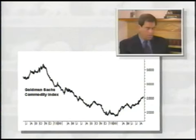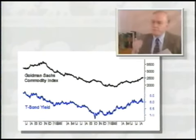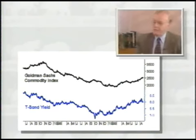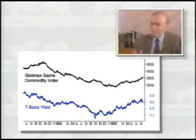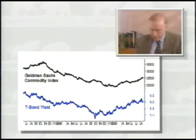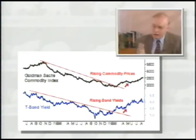Looking at a chart comparing the Goldman Sachs Commodity Index and US Treasury bond yields, they move in tandem — commodities and bond prices move in opposite directions, but commodities and interest rates move in the same direction. The chart along the top is the Goldman Sachs index; the chart along the bottom is Treasury bond yields. You can hardly tell the two apart. Into the beginning of 1999, commodity prices were in a downtrend and bond yields were in a downtrend. However, both broke their downtrend lines right around the first quarter of 1999, demonstrating a clear link between rising commodity prices and rising interest rates.